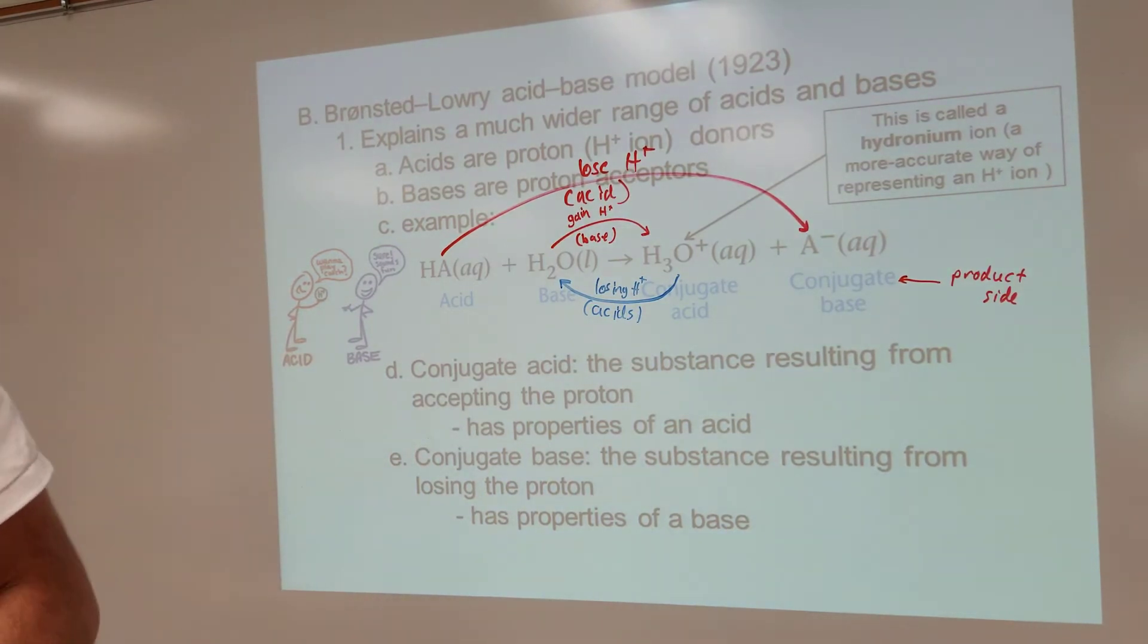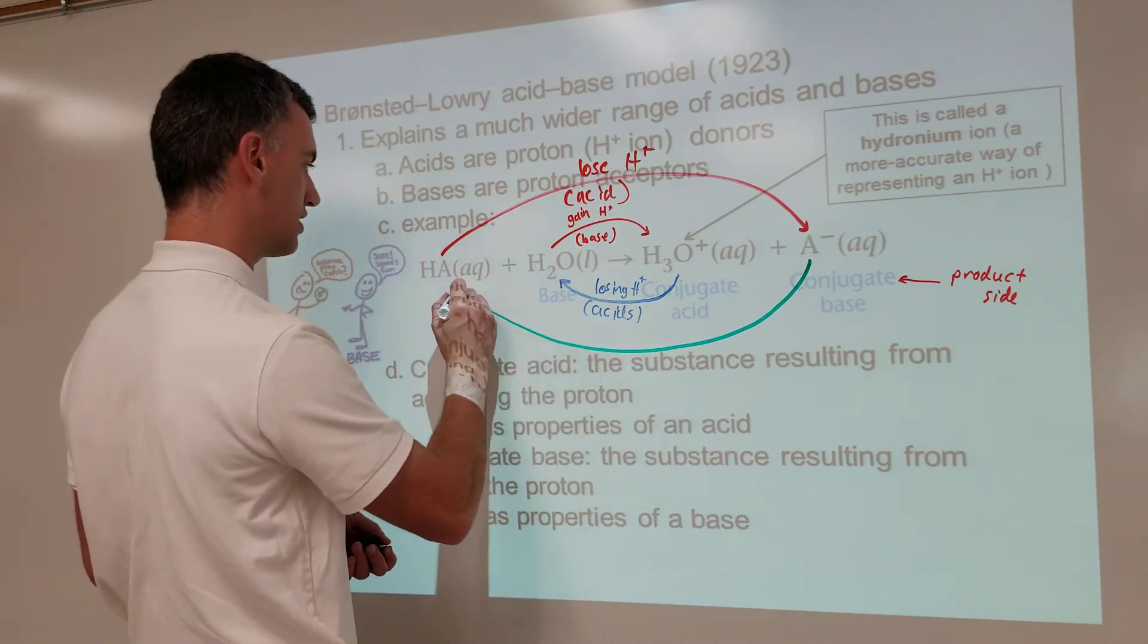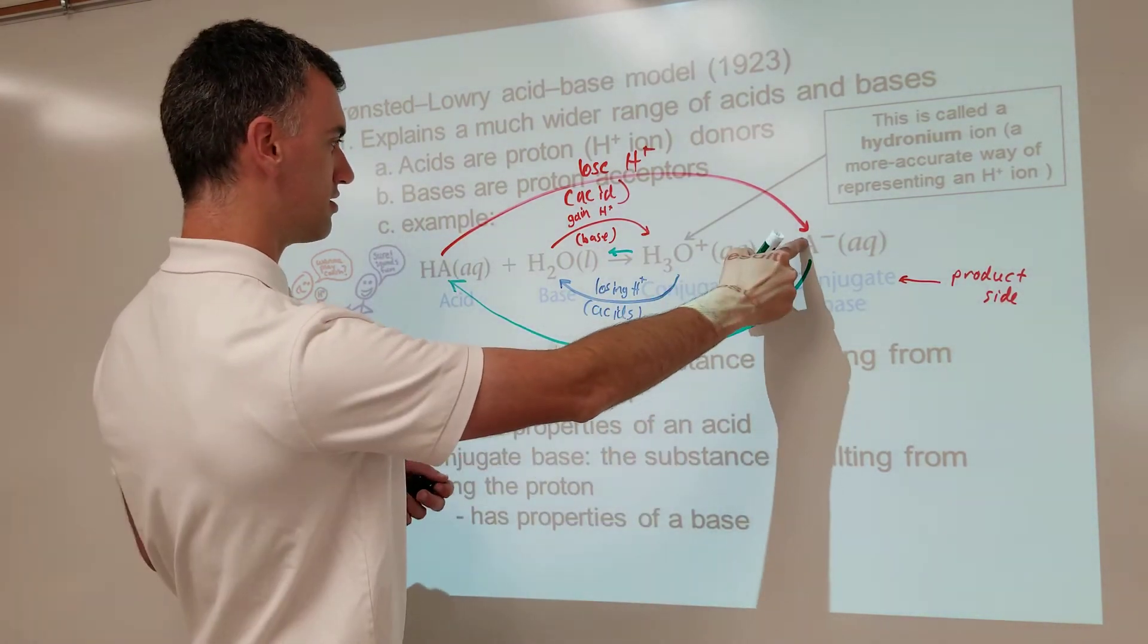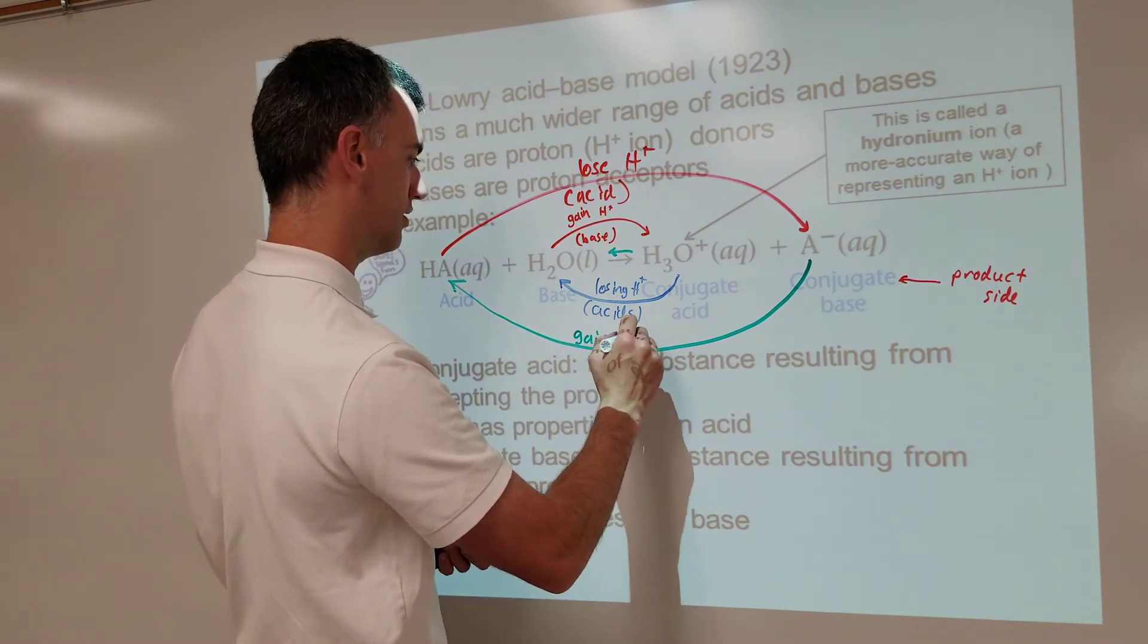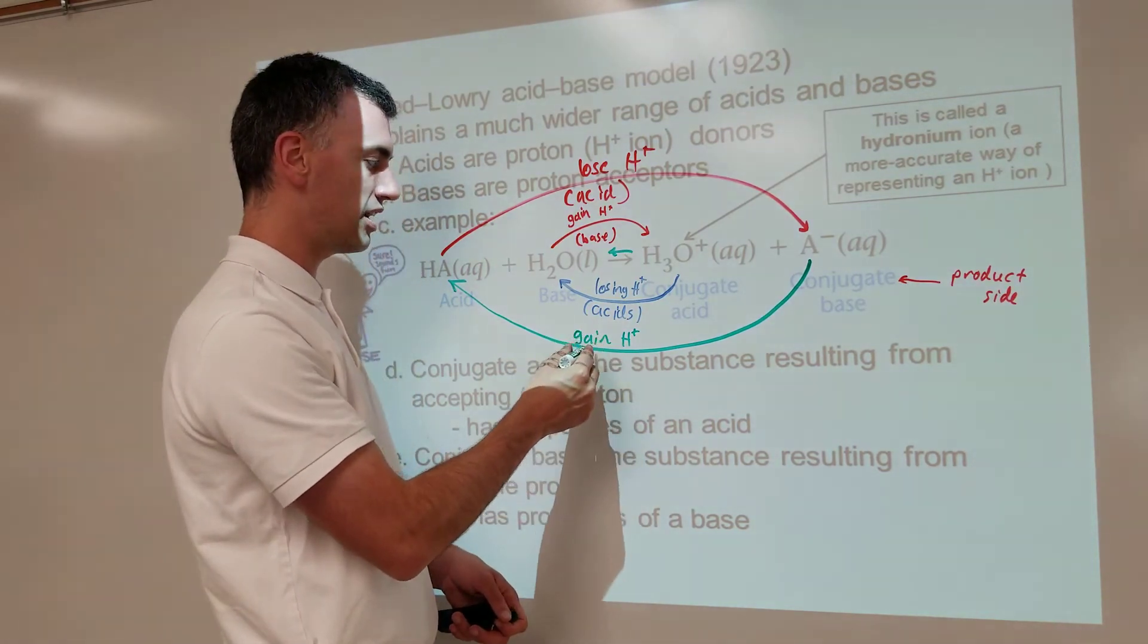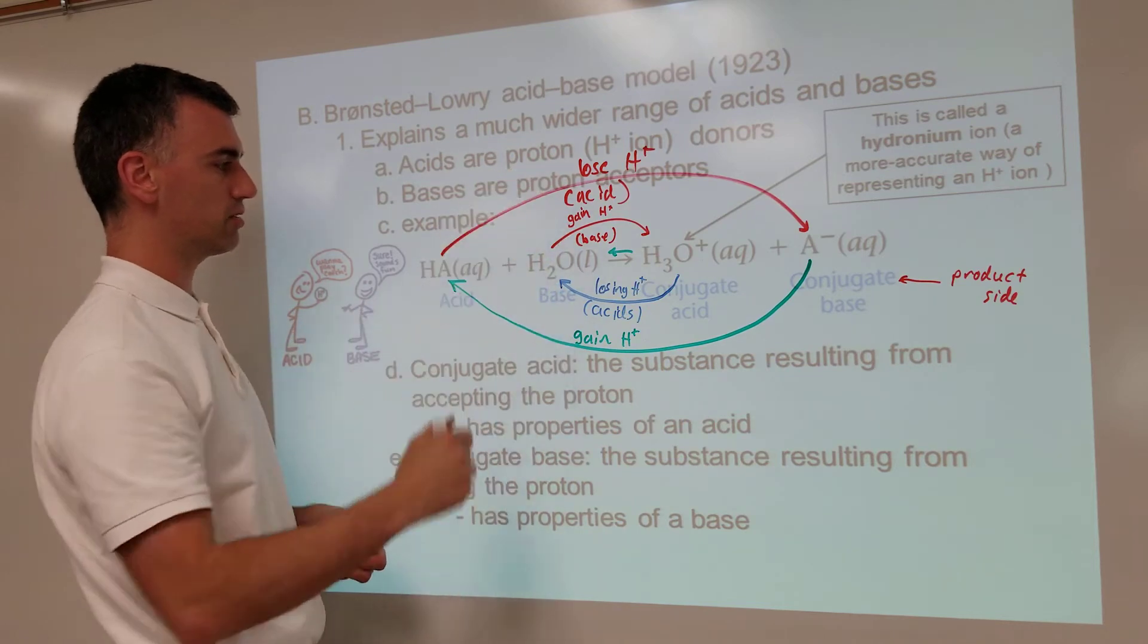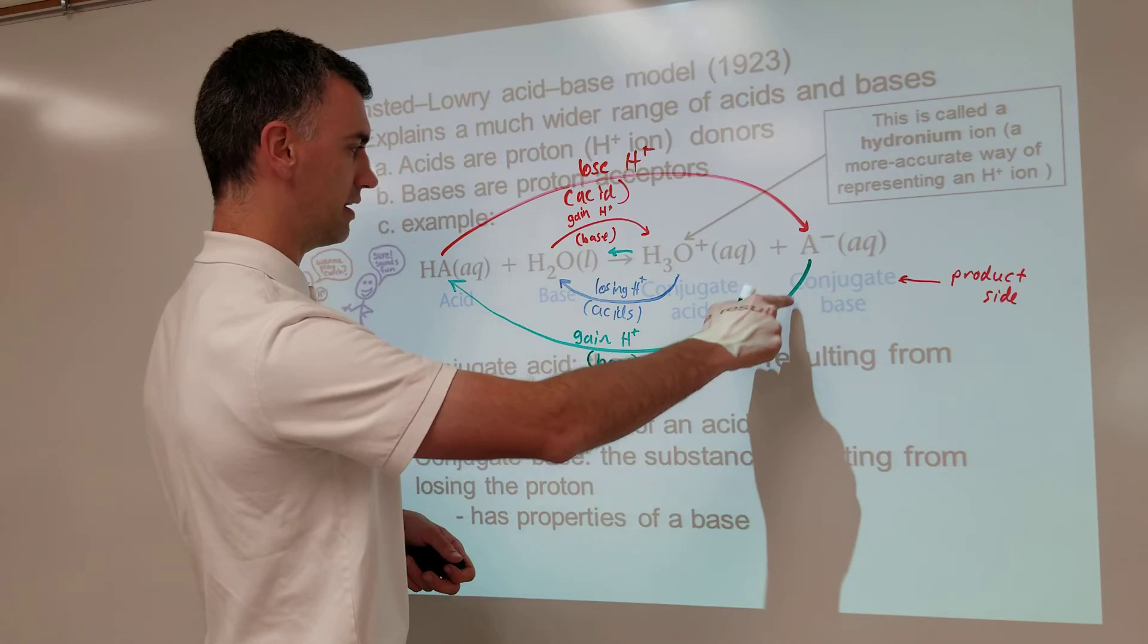And the same thing can apply, conjugate base right here. This can turn back into this because this is not a one-way reaction. It goes in both directions. Product can turn back into reactant again. So for this to turn into this, it must gain a hydrogen ion, which means gain a proton. And since this is a proton, if it gains a proton, we say it accepts a proton. And anything that accepts a proton, bases are proton acceptors, it's a base. So this is a base that accepts a proton.